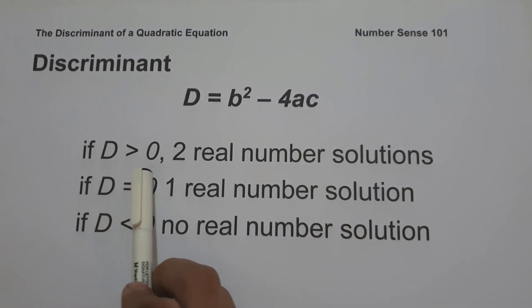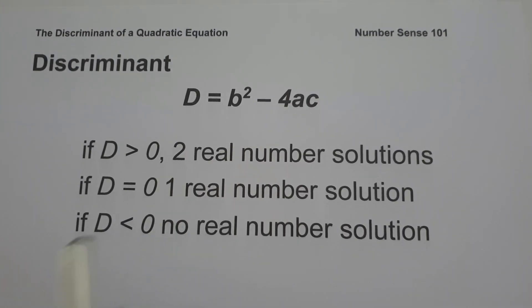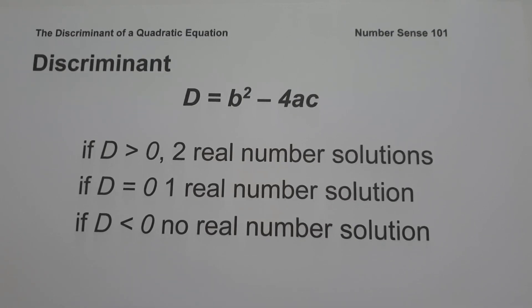If the discriminant is greater than zero, the quadratic equation has two distinct real number solutions. If the discriminant is equal to zero, the quadratic equation has one real number solution. And if the discriminant is less than zero, or if it is a negative number, the quadratic equation has no real number solution. These are the basic concepts you need to remember in order to determine the discriminant of a quadratic equation.